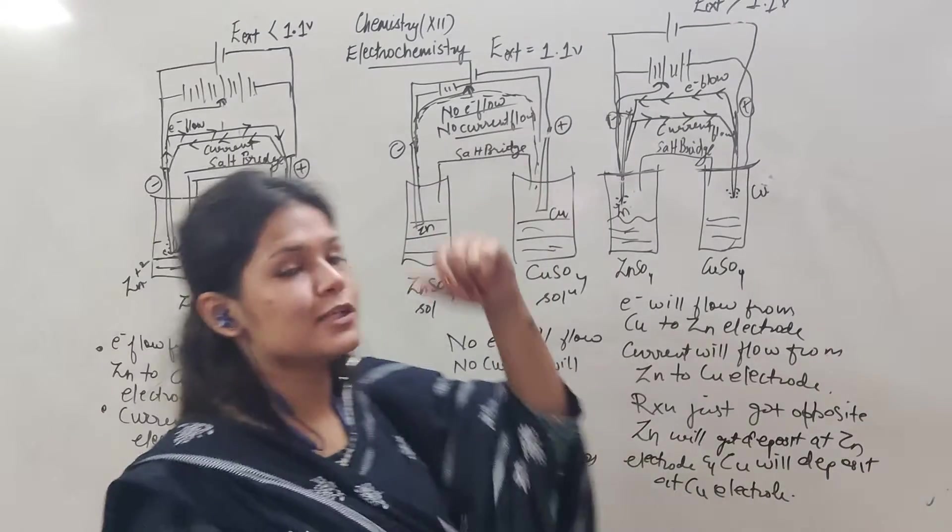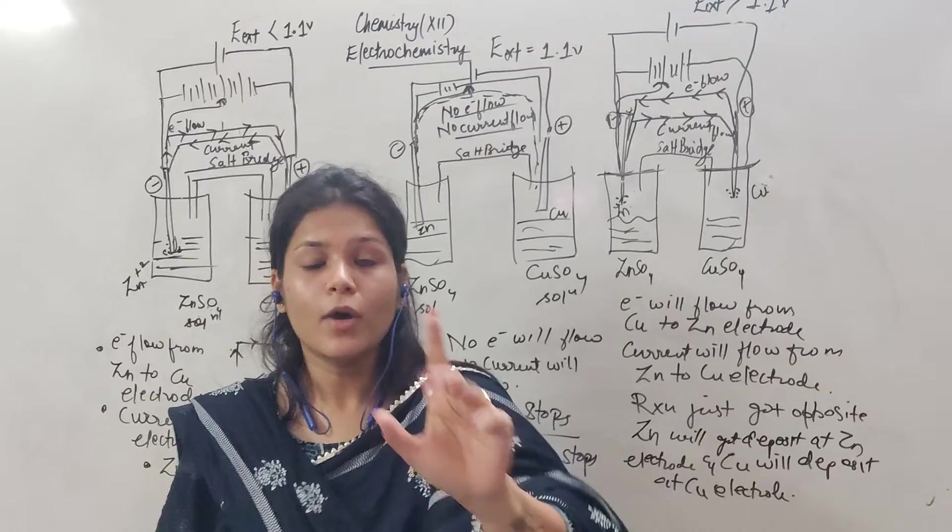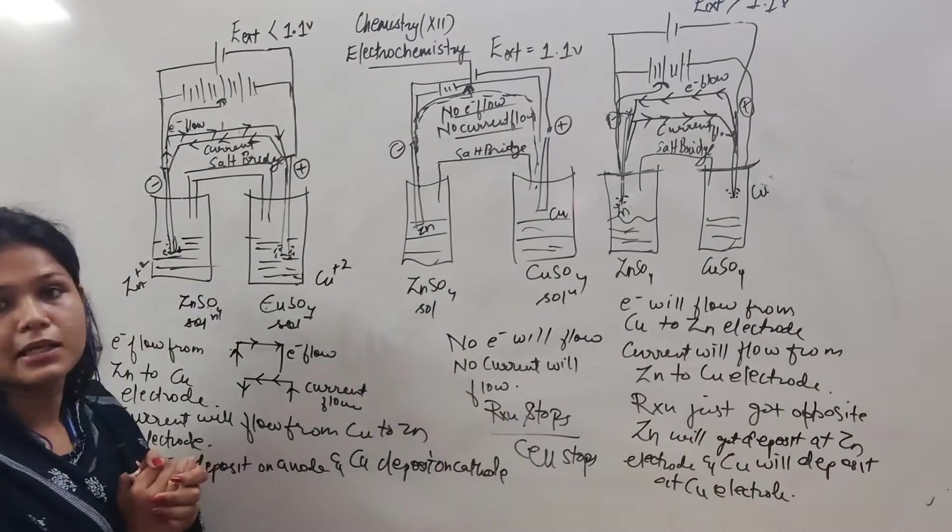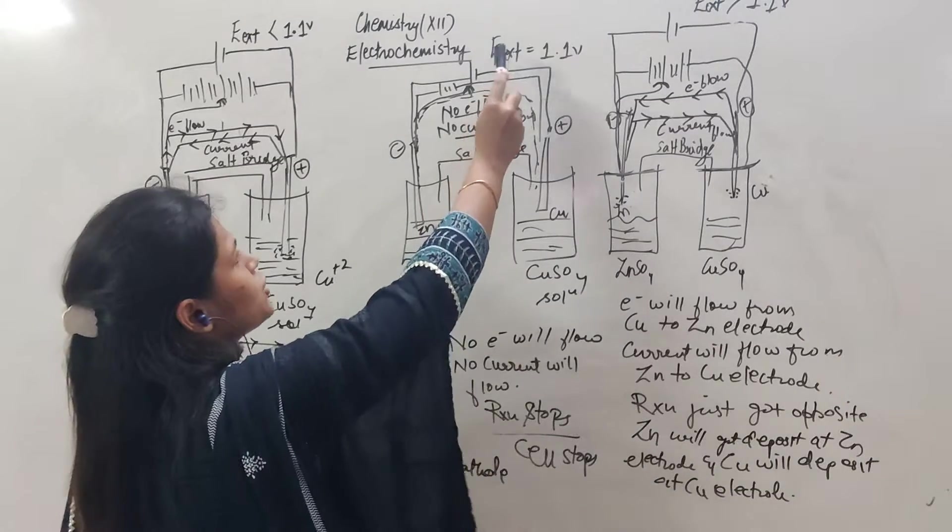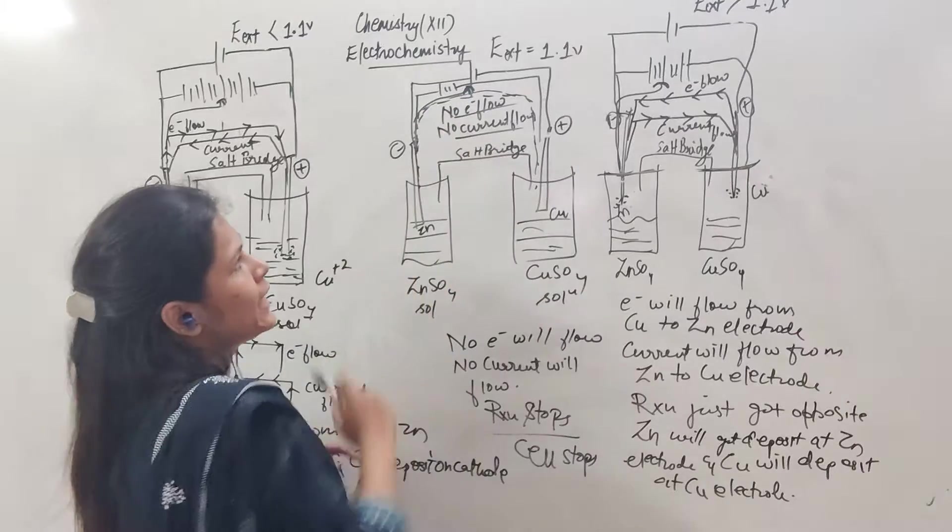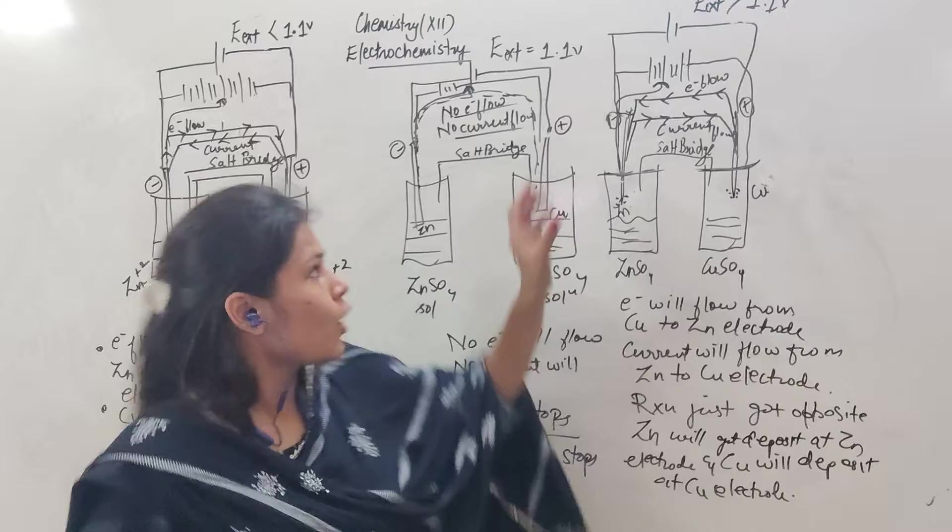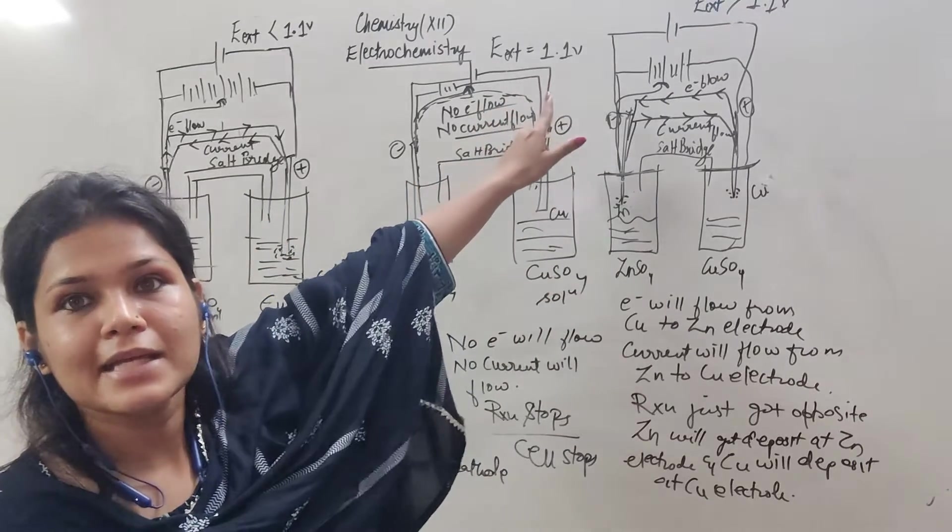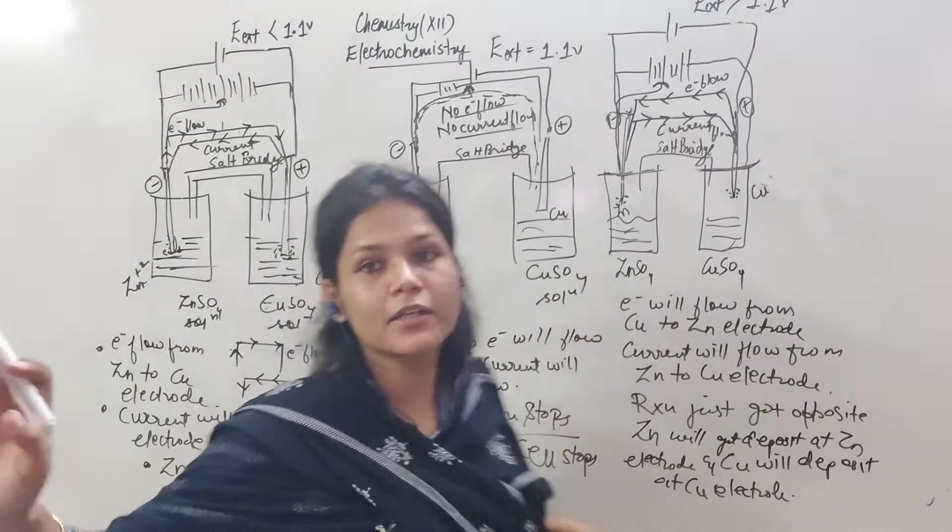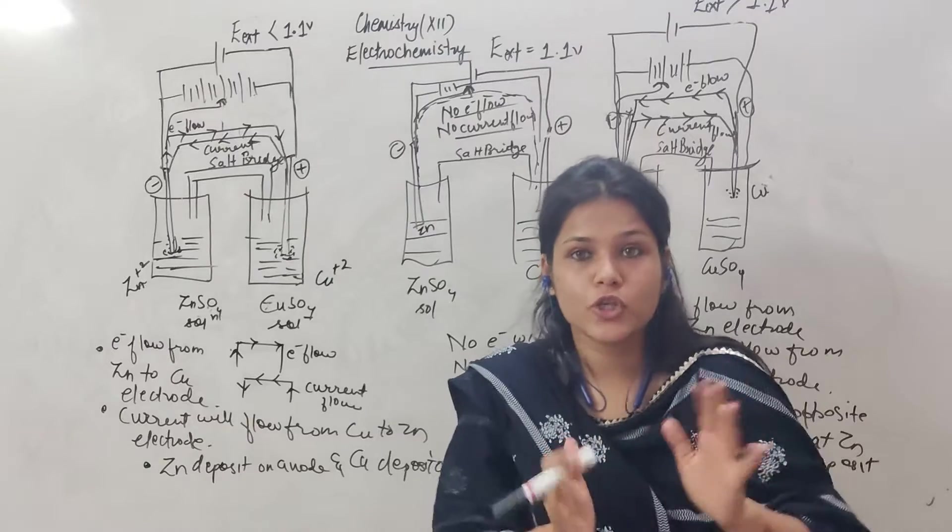But if the potential is equal to 1.1 volt, 1.1 volt is the cell voltage, now you have to connect the external voltage. The potential meter can be connected. So if it comes to 1.5 voltage, exactly what does that mean? If it comes to the current flow, the cell will be connected.